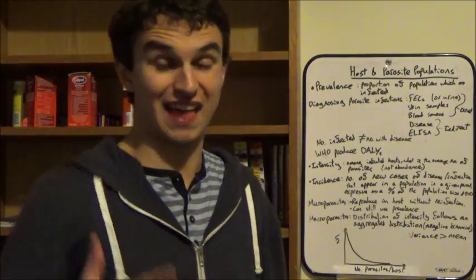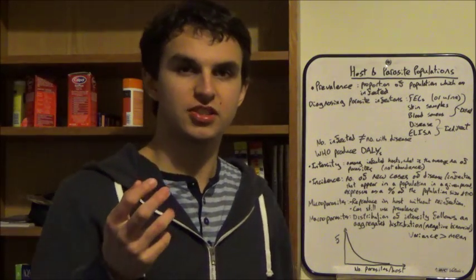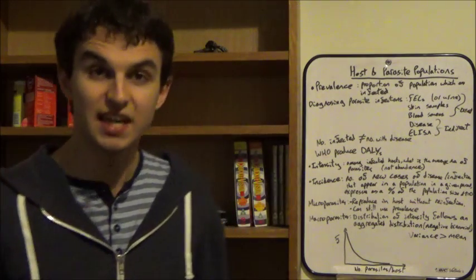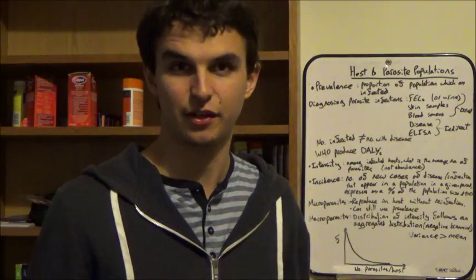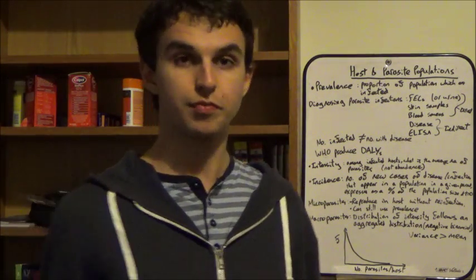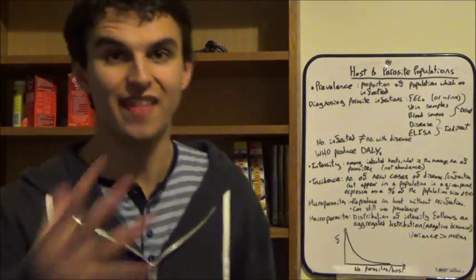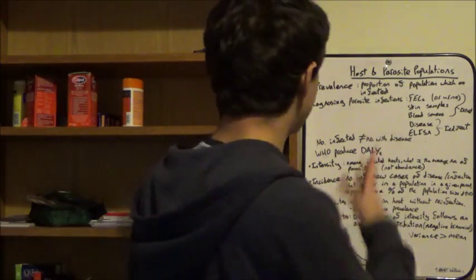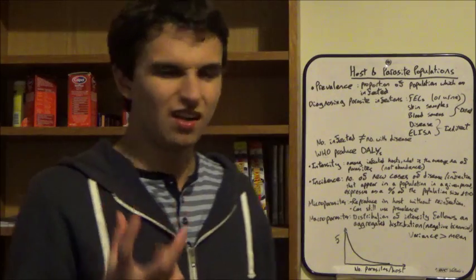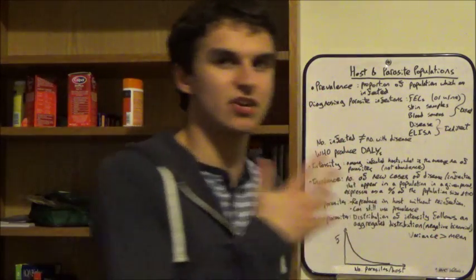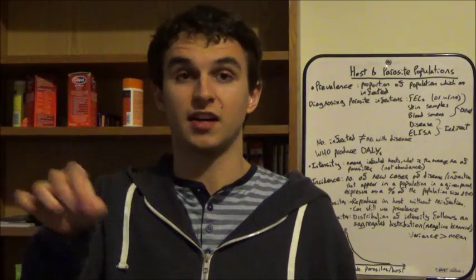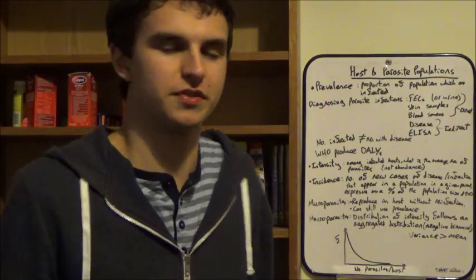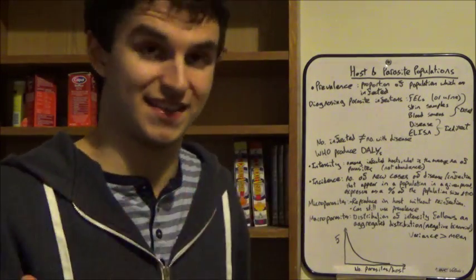So for example, if you ingested two tapeworms, you'll stick with two tapeworms — they won't multiply inside you. They'll reproduce, eggs will release in your poo, and then carry on their life cycle. For micro parasites, we can use prevalence, but we can't really measure intensity or abundance, because that would involve actively counting the number of individual parasites within each host — which for something as small as a protozoan is impossible. And even if we were able to, this wouldn't give any indication of the number of infected events that had occurred.